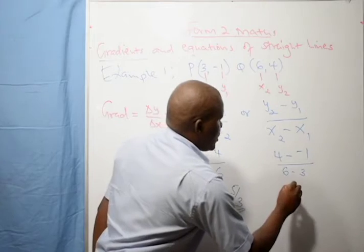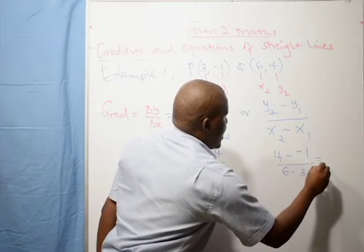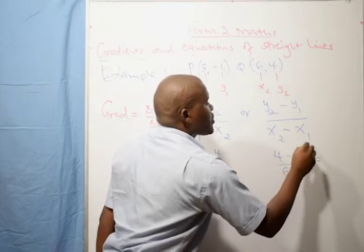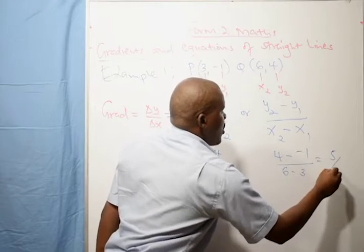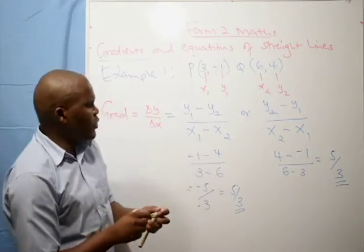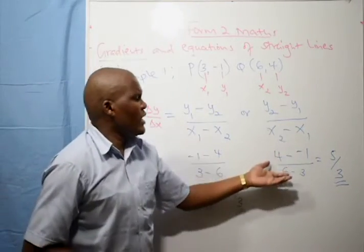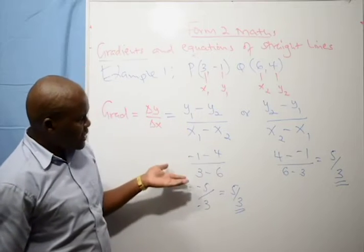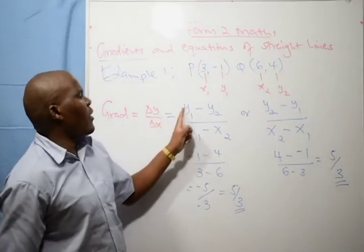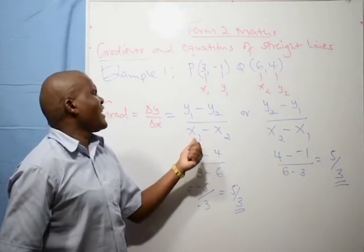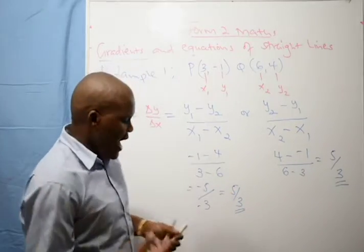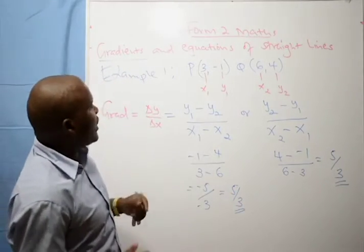Using the second method: y2 is 4, minus negative 1. From integers, that is 4 plus 1, which is 5. All over 6 minus 3, which is 3. So the answer is also 5 over 3. The answers are the same, which is why you don't need to use both ways — just be consistent whichever one you choose.